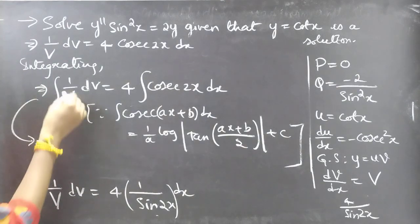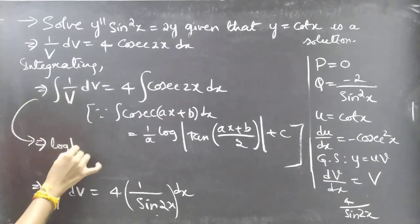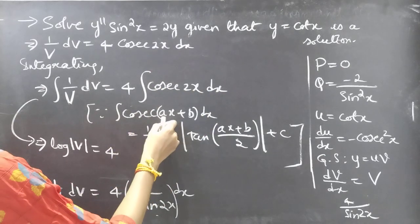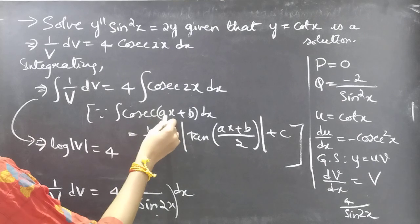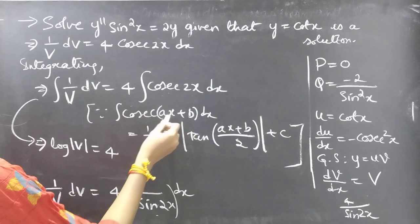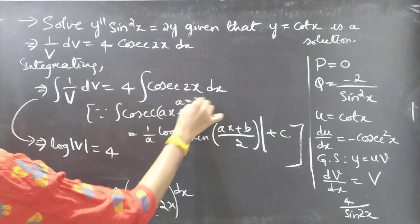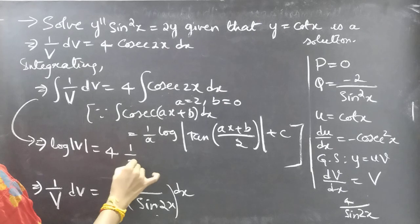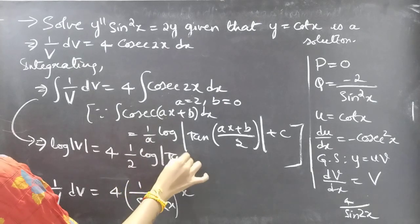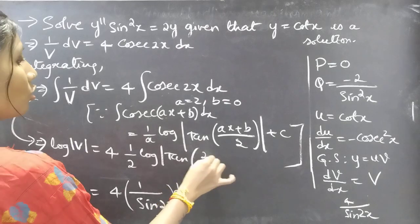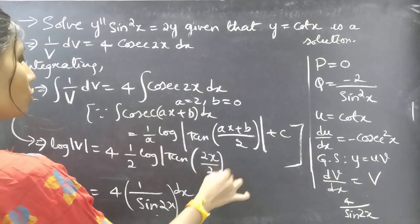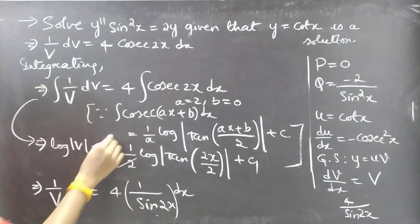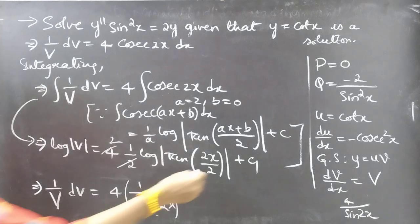The left side integrates to log|V|. The right side: 4 · (1/2)·log|tan(2x/2)| + C₁ = 2·log|tan x| + C₁. So we get log|V| = 2 log|tan x| + C₁.